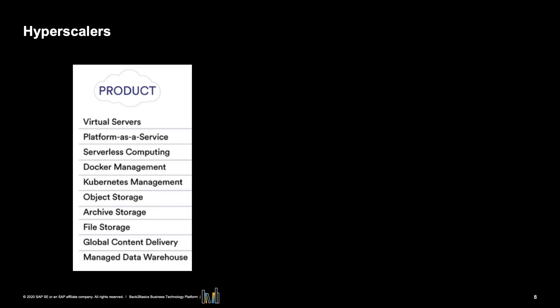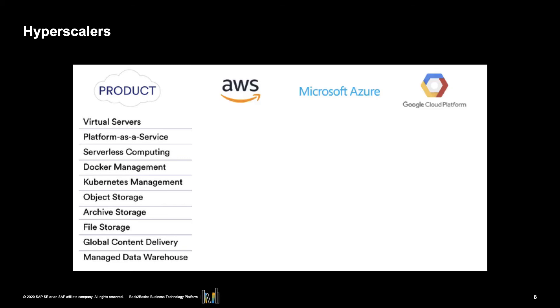In the context of a cloud architecture, the term hyperscaler is often mentioned. In computing, hyperscale is the ability of an architecture to scale appropriately as increased demand is added to the system. Hyperscale computing is necessary to build a robust and scalable cloud, big data, or distributed storage system, and is often associated with the infrastructure required to run large distributed sites such as Google, Facebook, Twitter, Microsoft, or Amazon. In this episode, we will focus on the three main hyperscalers recognized by analysts: Amazon with Amazon Web Services (AWS), Google with Google Cloud Platform (GCP), and Microsoft with Azure.